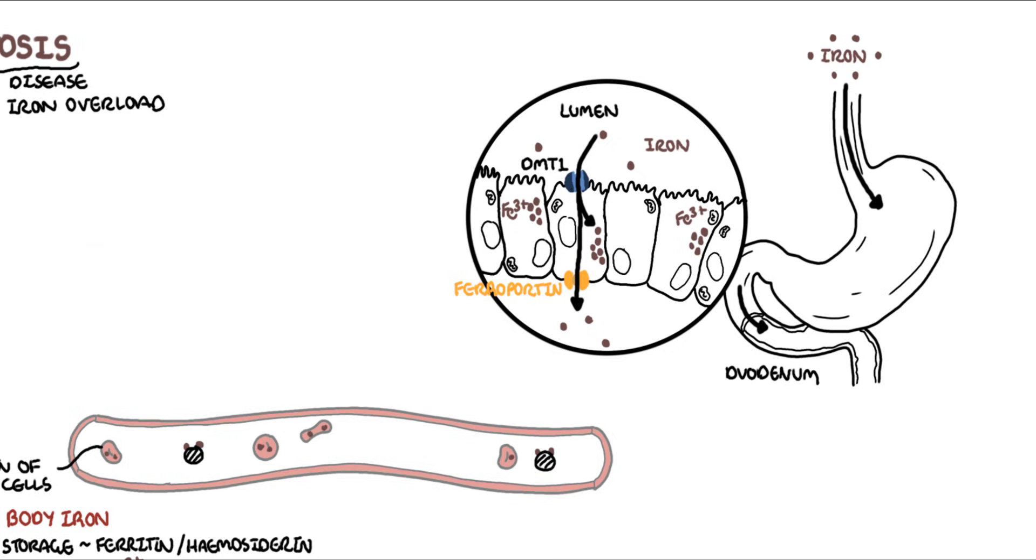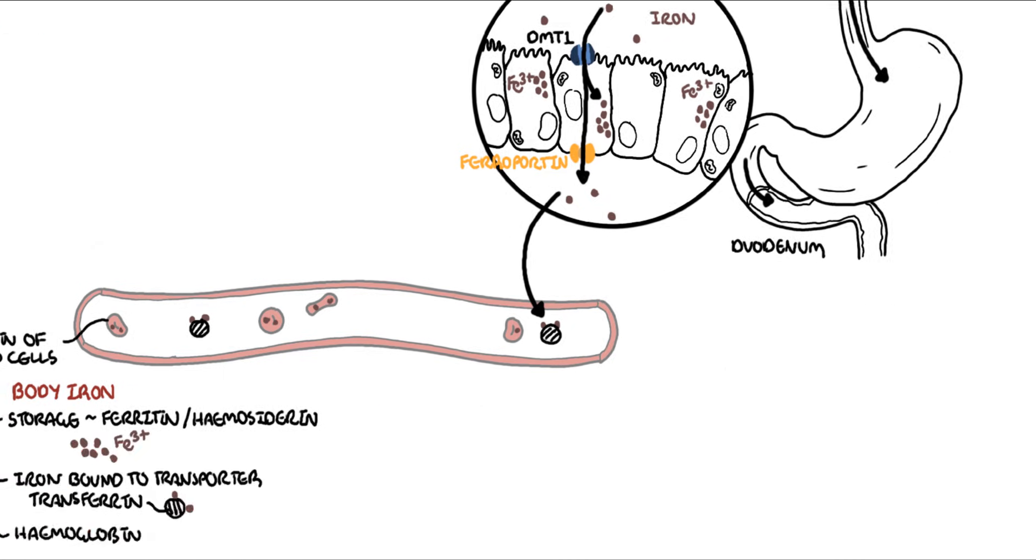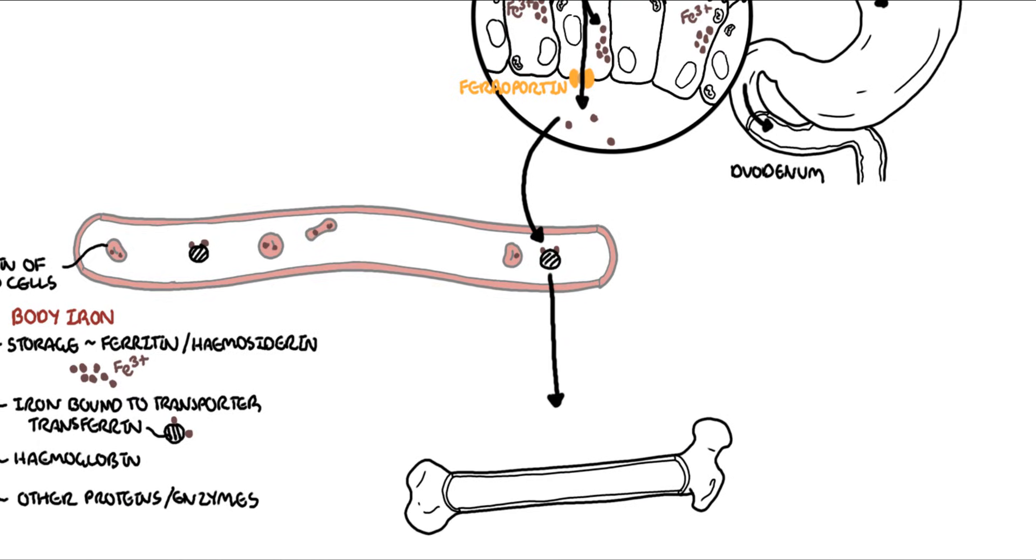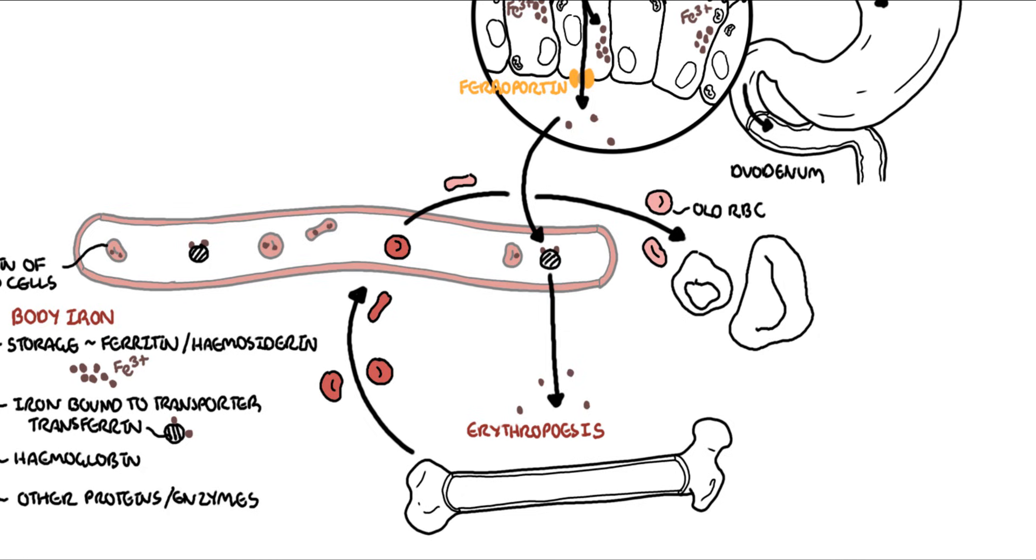Once iron is in the circulation, it is bound to the transporter called transferrin. Remember, transferrin is the transporter that carries iron all around the body. From here, iron can be brought into the bone marrow where we make more red blood cells, so iron stimulates erythropoiesis. Eventually, about 120 days or so, the red blood cells die and get destroyed by the reticuloendothelial system. A recycling process happens - the iron is once again released into circulation and bound to transferrin.